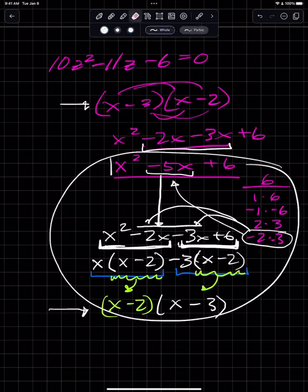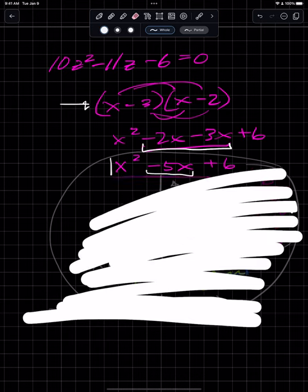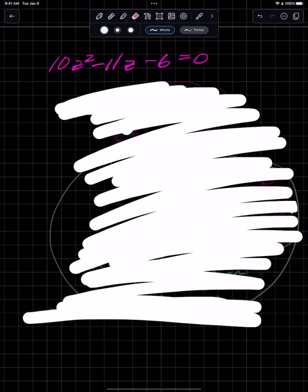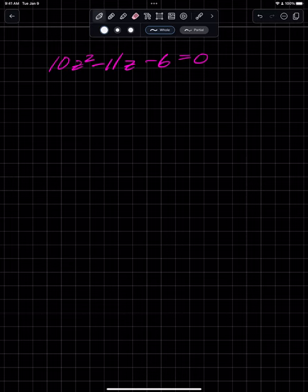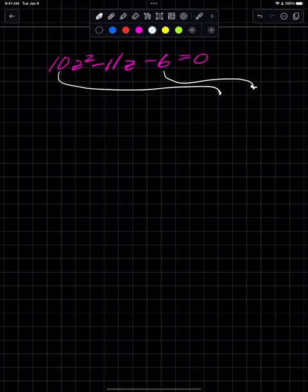Okay, so I'm going to erase all this so we can go back to the 10z squared. So 10z squared minus 11z minus 6. I'm going to take this negative 6 and this 10 and multiply them. Why do I need to do that? In the old version, if I had x minus b times x minus d...